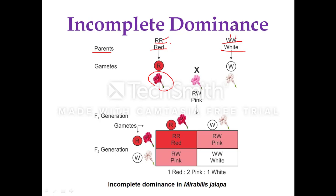The white flower is controlled by small rr (referred to as capital W or small rr in some textbooks). When these two plants are crossed, we get pink flower bearing plants in F1. The pink color is intermediate between red and white. This incomplete dominance is due to the inability of the dominant allele to fully mask the effect of the recessive white flower bearing character.